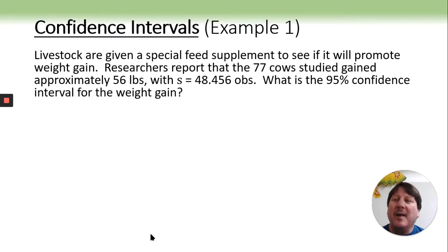Let's go ahead and run through a quick example of livestock. Research reported that 77 cows studied gained approximately 56 pounds with a sample standard deviation of 48.456 observations. What is a 95% confidence interval?